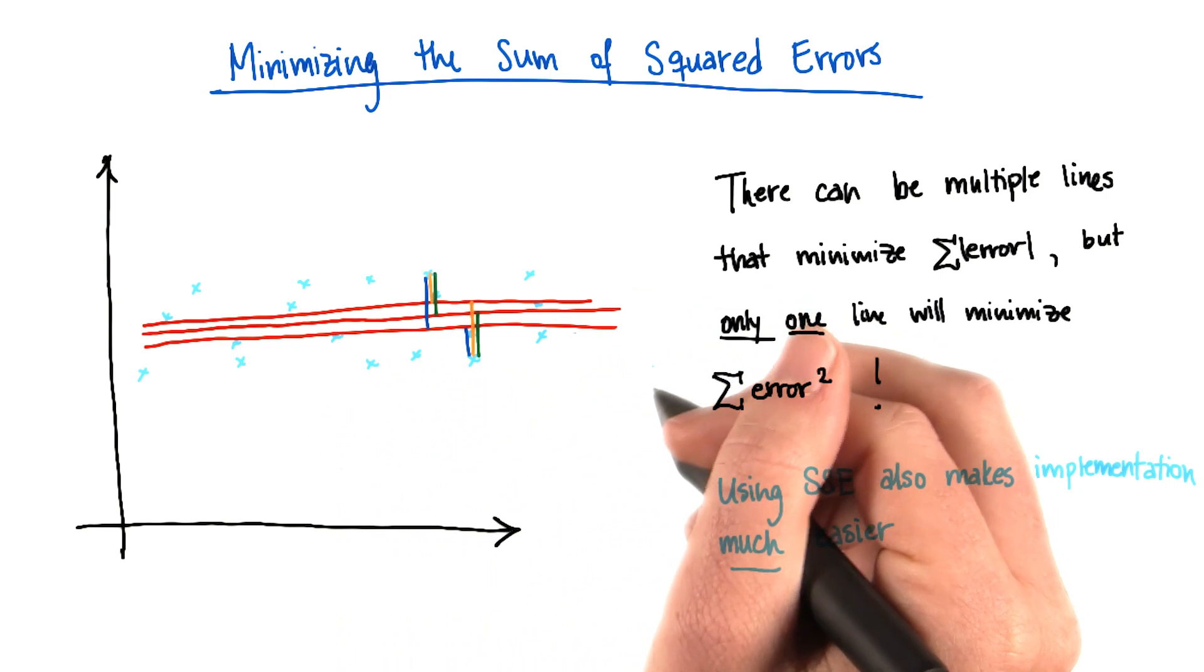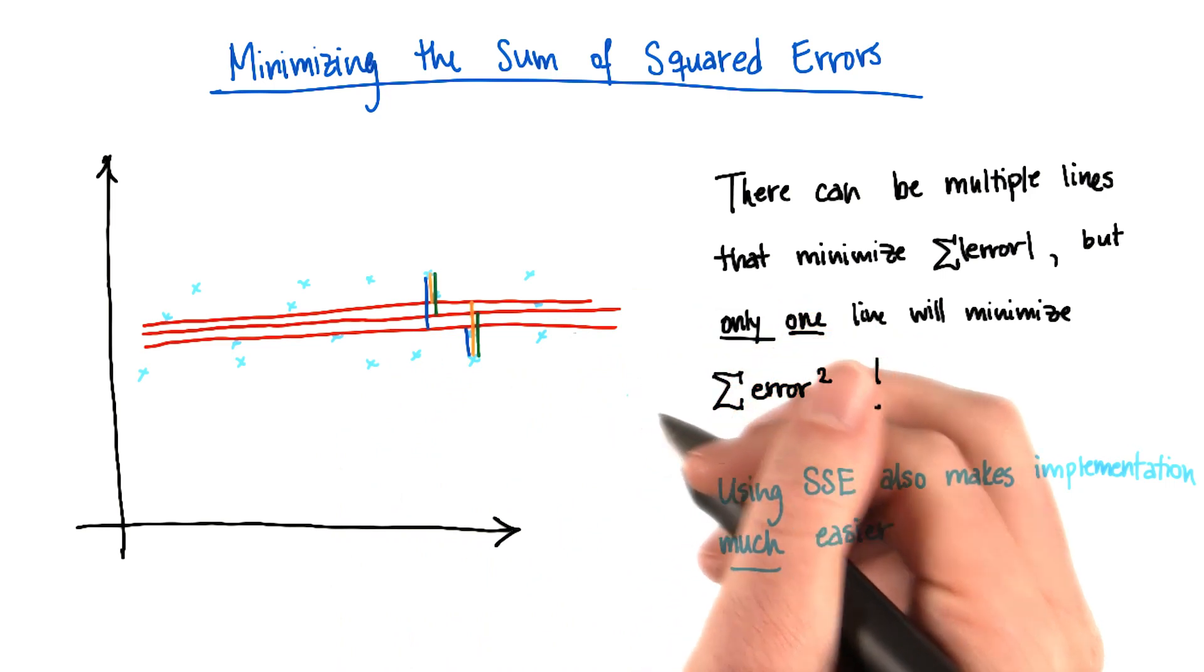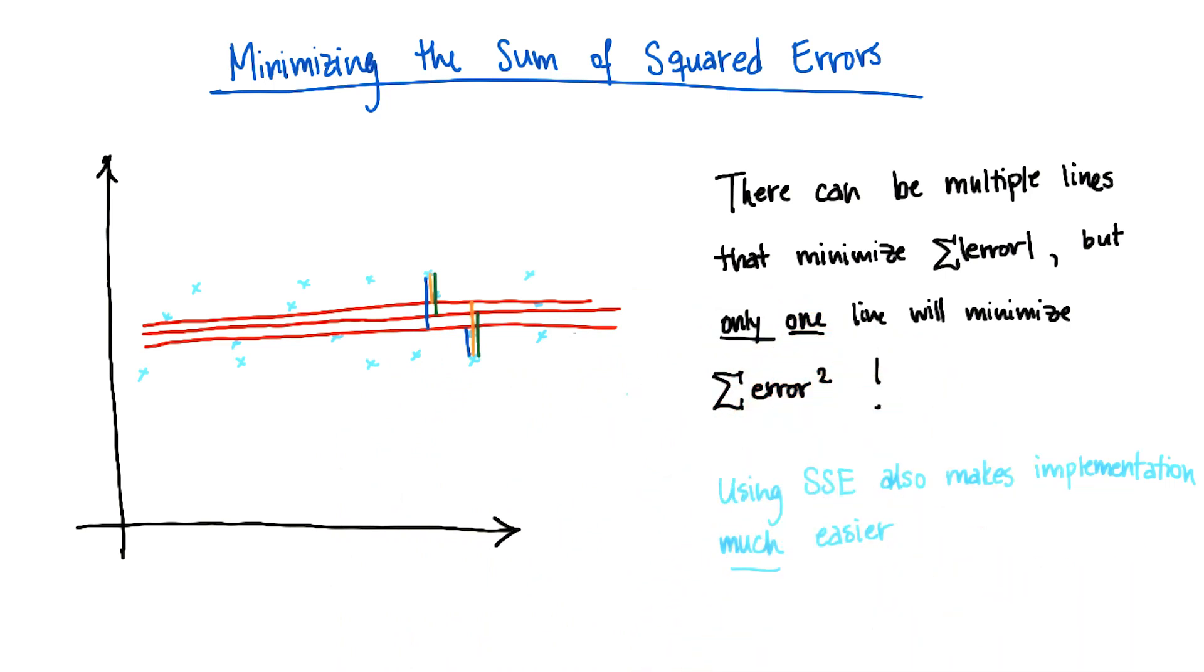It's much easier to find this line when what you're trying to do is minimize the sum of the squared errors instead of the sum of the absolute errors. And this is something that we have the luxury of not worrying about too much when we're using sklearn to do most of the computational heavy lifting for us.